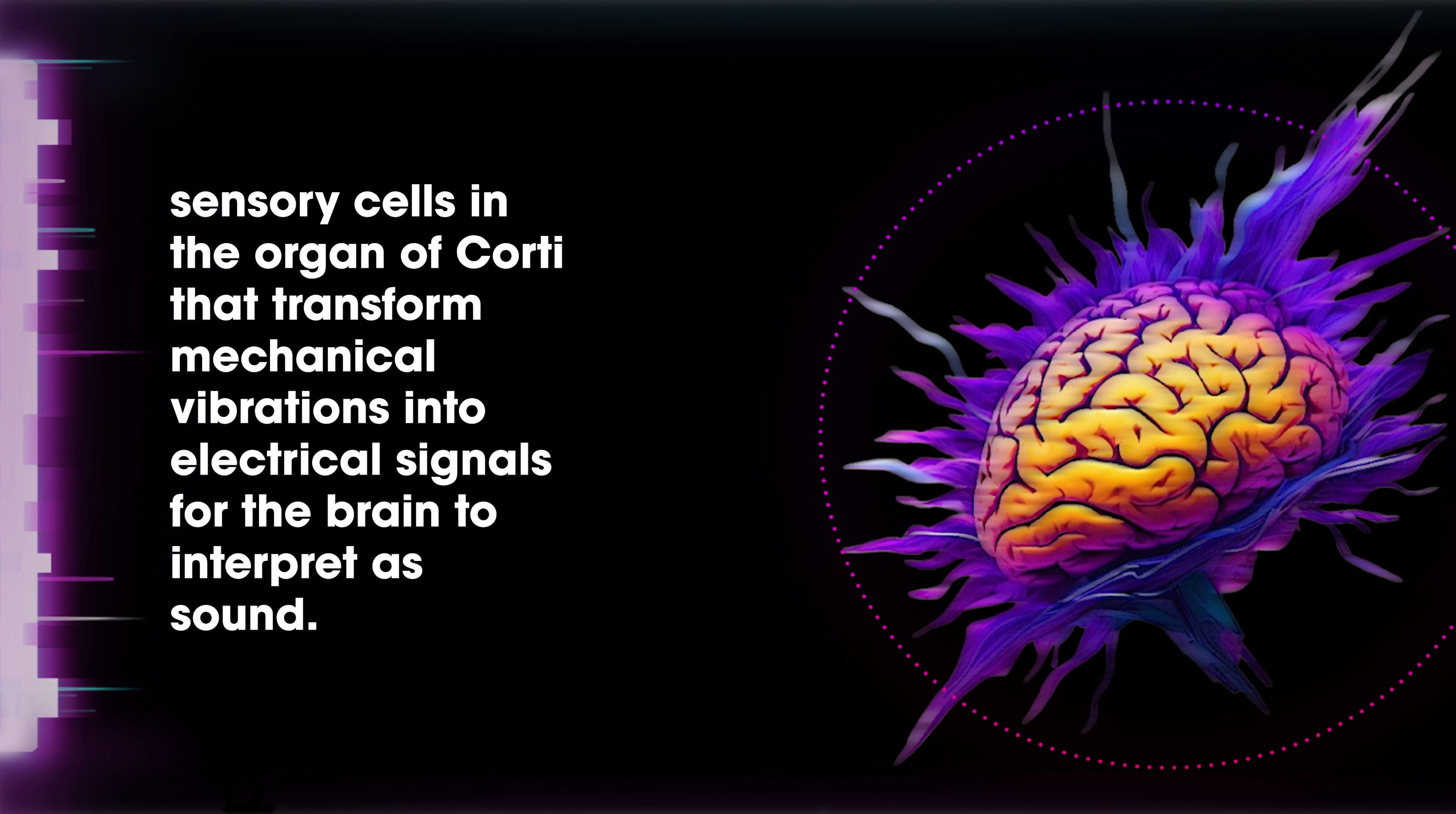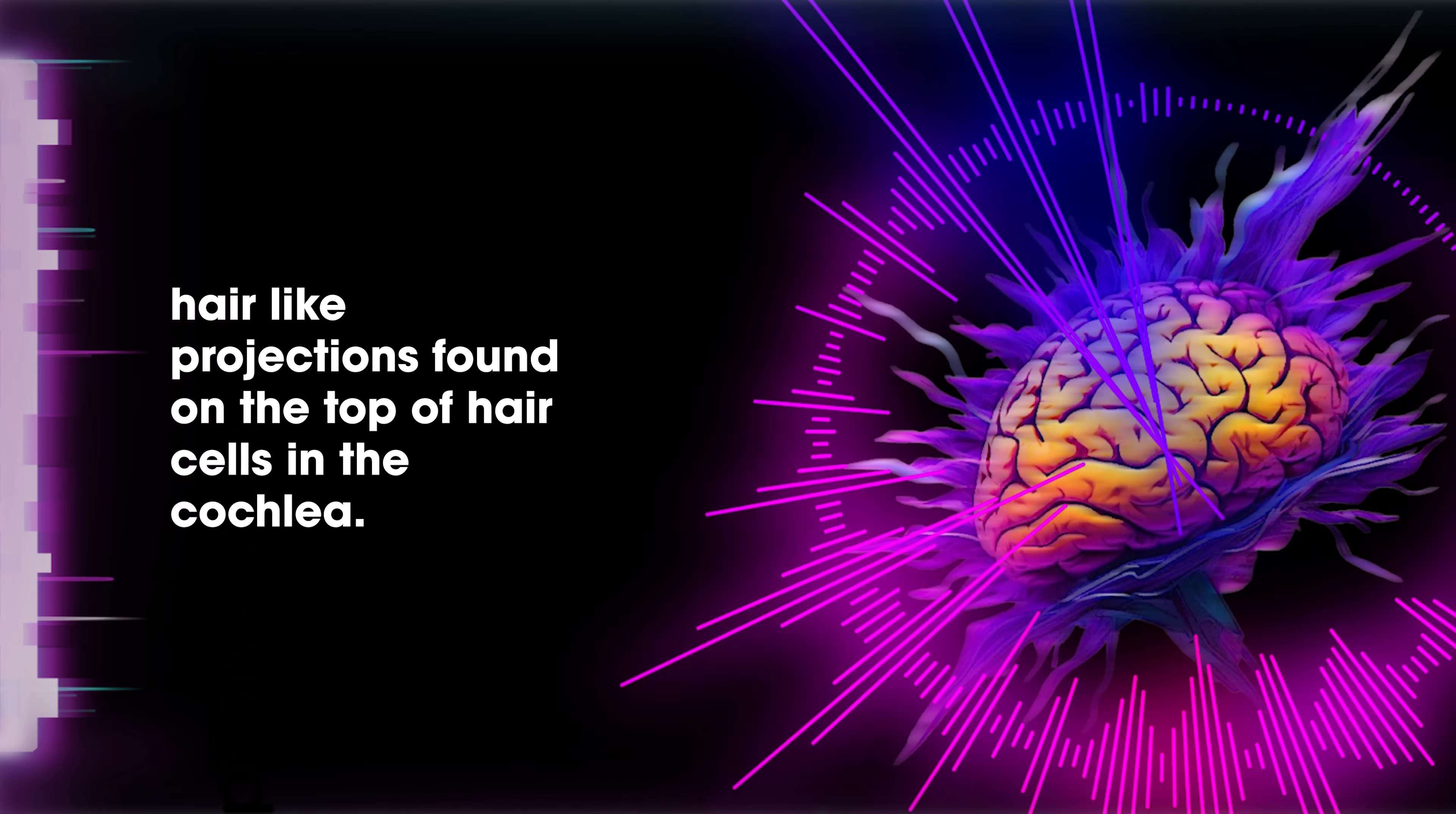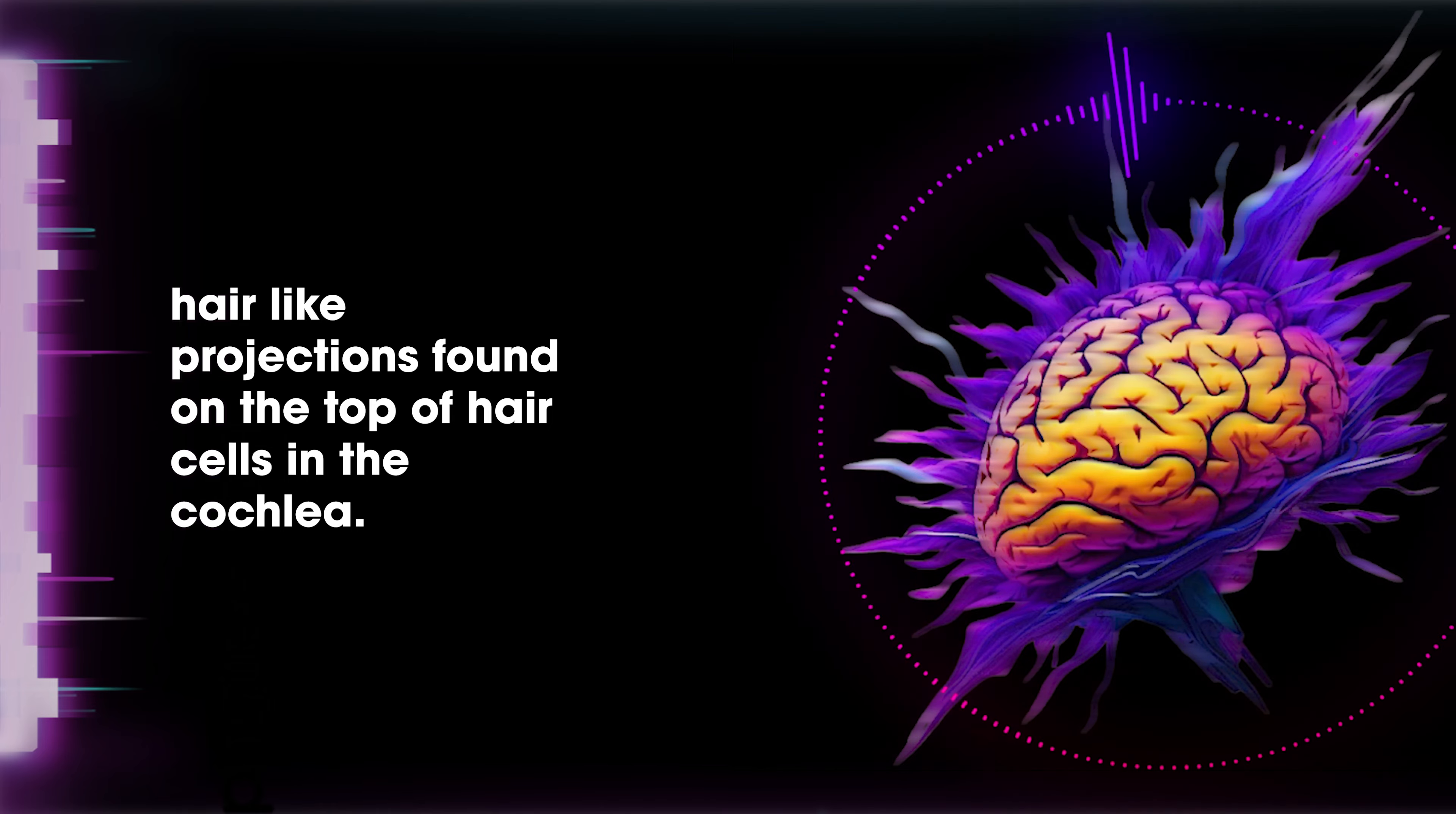Stereocilia: hair-like projections found on the top of hair cells in the cochlea.